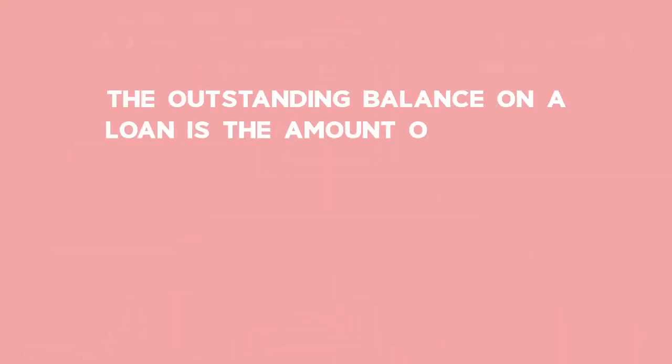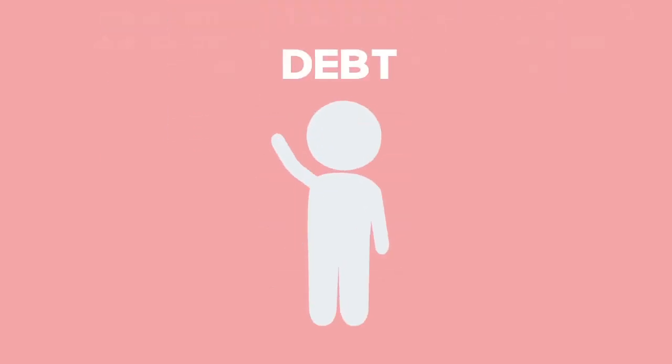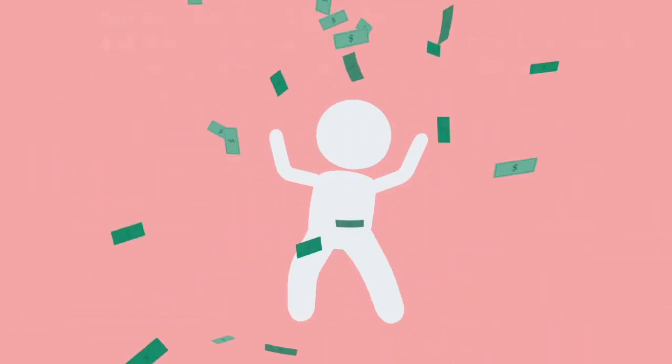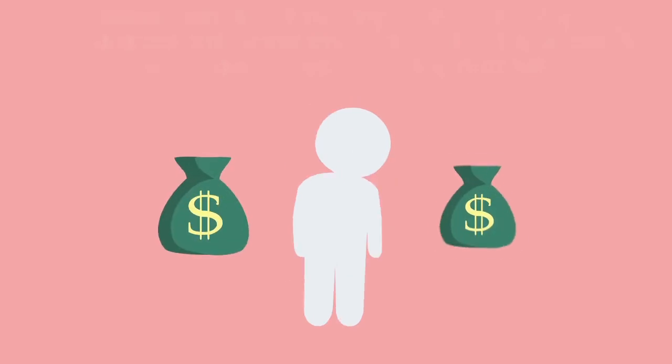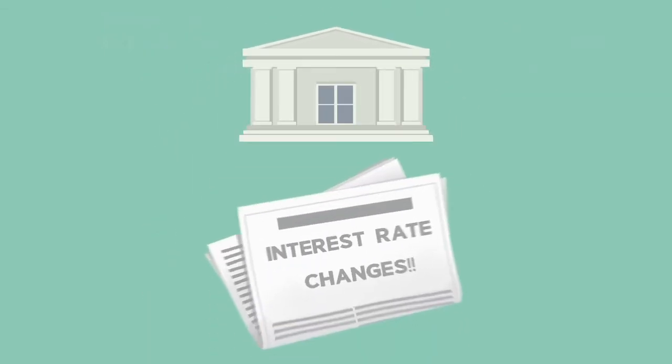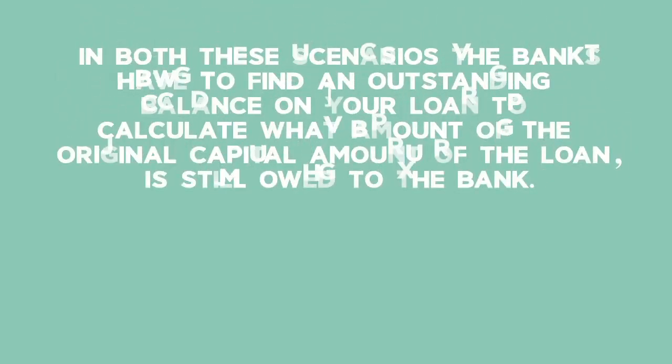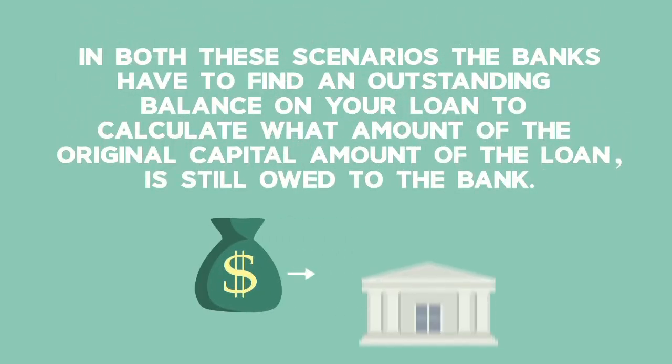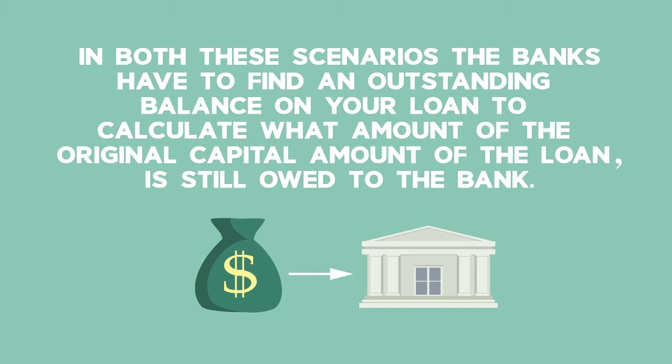The outstanding balance of a loan is the amount owed on a debt on a specific date. A person with debt may decide to settle their debts when they come across extra money — by winning a lotto game or inheriting money. We also hear that the Governor of the Reserve Bank may announce a change in the interest rate. In both scenarios, the banks have to find the outstanding balance to calculate what amount of the original capital is still owed.